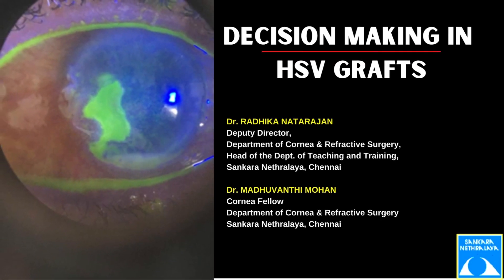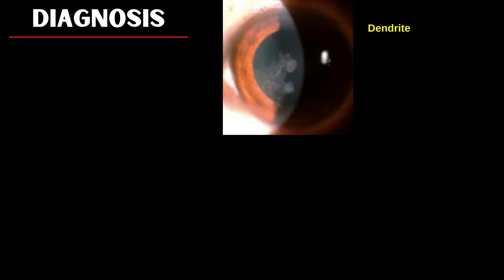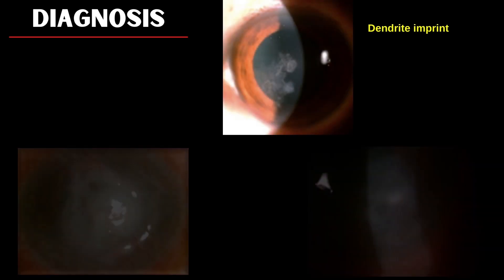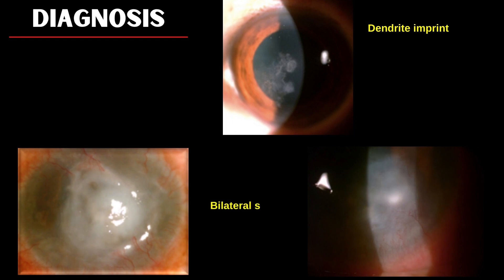Decision making in HSV graphs. The first decision we need to make is the diagnosis, which is largely clinical in the early stage. In the first pre-operative picture, we see the imprint of the scarred dendrite. Another patient shows bilateral scarring with vascularization, which is most commonly associated with healed HSV keratitis.